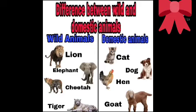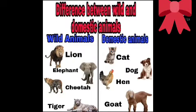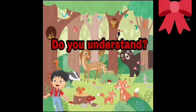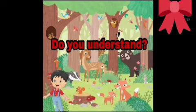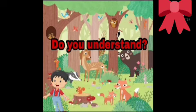Okay, difference between wild animals and domestic animals. Wild animals mein kya hai? Lion, elephant, cheetah, tiger. And domestic mein kya hai? Cat, dog. Do you understand? Samaj me aah raha hai na? Maim ne kya samjaya — wild or domestic? Domestic kahaan rehenge? Aapne surrounding mein rehenge. Or wild animals kahaan rehenge? Jungal mein rehenge.